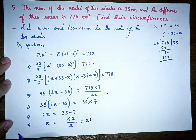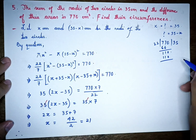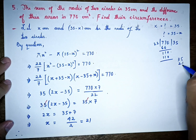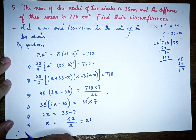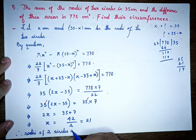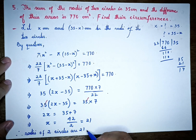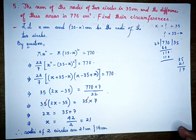So we have the two radii. x is equal to 21, and 35 minus 21 is equal to 14. So the radii of the 2 circles are 21 cm and 14 cm.